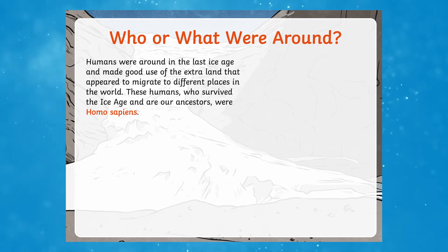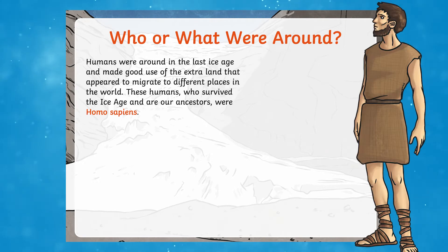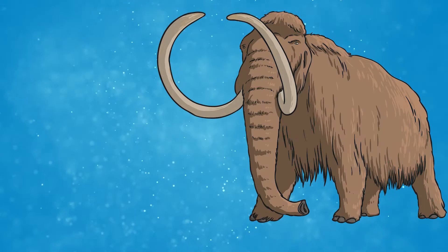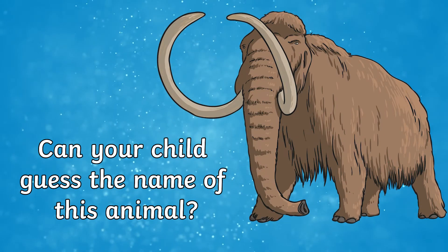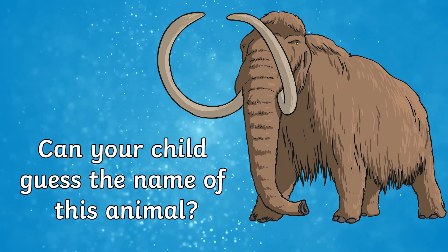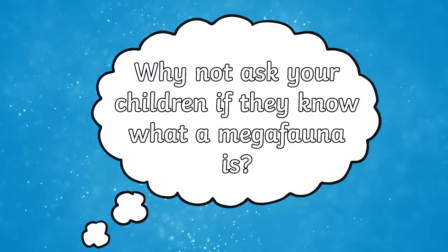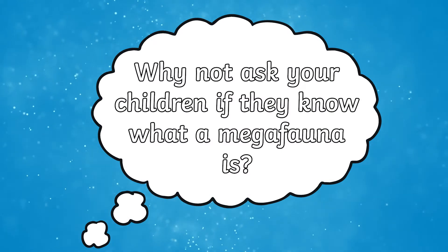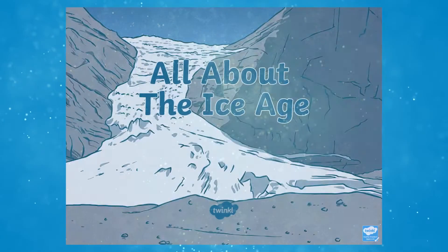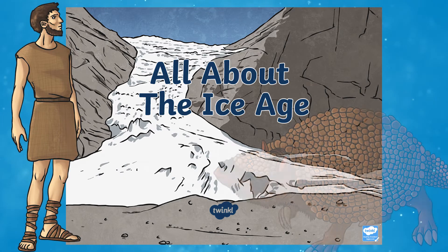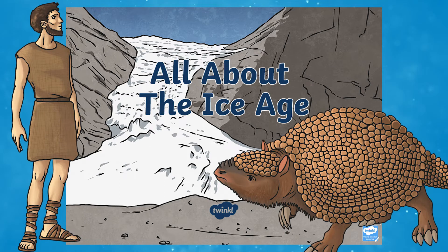The presentation explains who was around during the ice age. Humans were around, but they were called homo sapiens. Children will be interested to find out what plants and animals also existed during this time. Why not ask your children if they know what a megafauna is? This presentation helps children to travel back in time and learn all about how the earth looked all of those years ago.